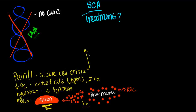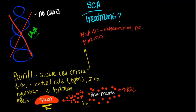For pain, common treatments include NSAIDs and narcotics. NSAIDs — non-steroidal anti-inflammatory drugs — help with inflammation and pain, and can be given daily as a prophylactic measure or only when the person experiences pain. Narcotics are used for increased pain episodes; if someone is experiencing a sickle cell crisis, they're going to be in a great deal of pain and will need narcotic pain medications.